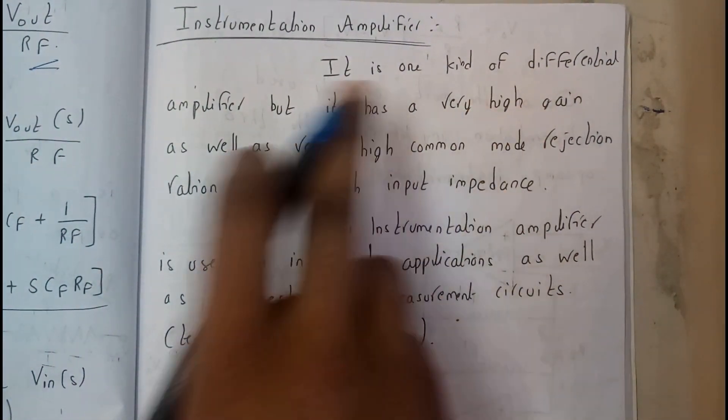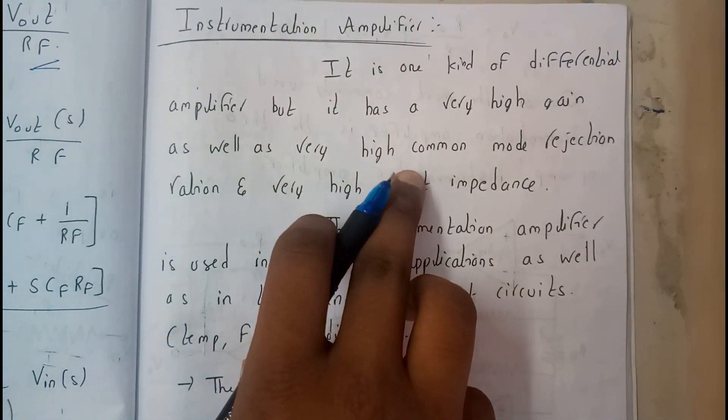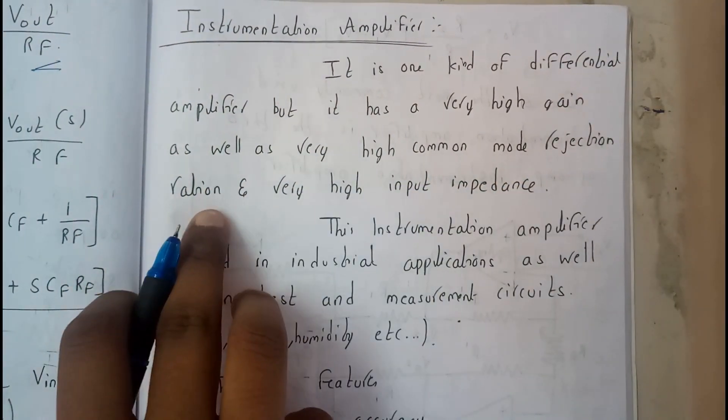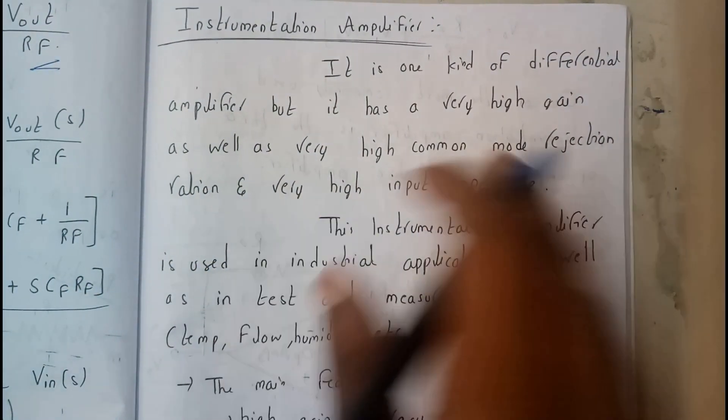It has very high gain as well as very high common mode rejection ratio and very high input impedance. These are the three main characteristics of an instrumentation amplifier.